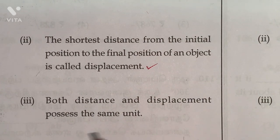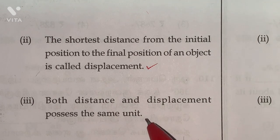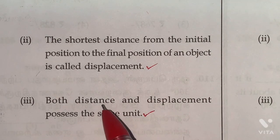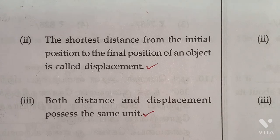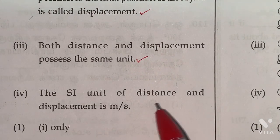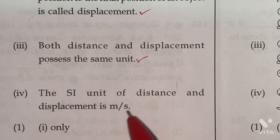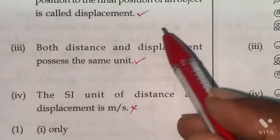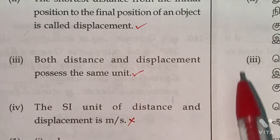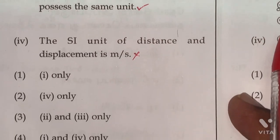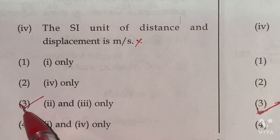The shortest distance from the initial position to the final position of an object is called displacement. Yes, this is correct. Both distance and displacement possess the same unit. Yes, this is also correct. Unit of distance meter, unit of displacement also meter. The SI unit of distance and displacement is meter per second. This is the wrong one. So second and third are correct statements, according to this option third one is the right answer.